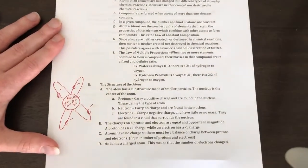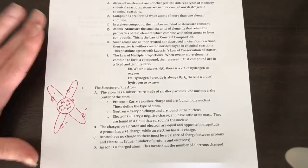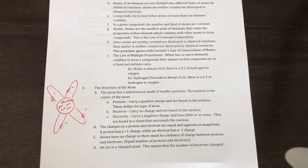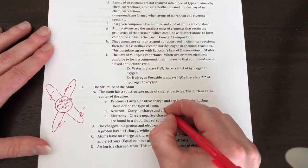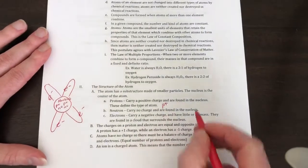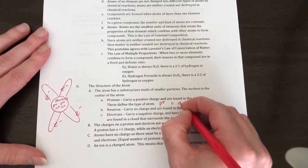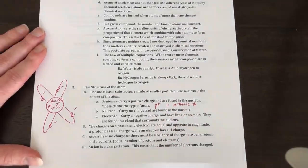An atom has a substructure made of smaller particles. The nucleus is the center of the atom, just like the nucleus is the center of the cell in biology. Protons carry a positive charge and are found in the nucleus. They define the type of atom. Protons are equal to your atomic number. P plus is the symbol that we're going to use, and it's equal to the atomic number.